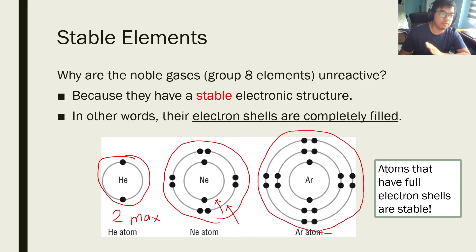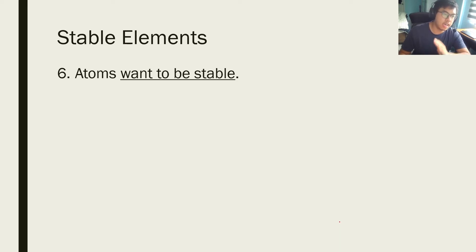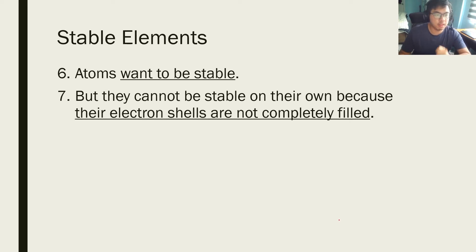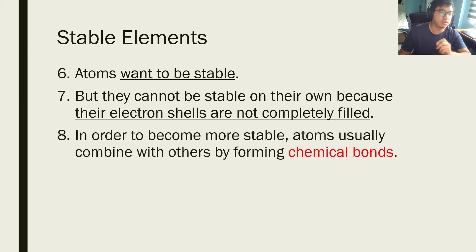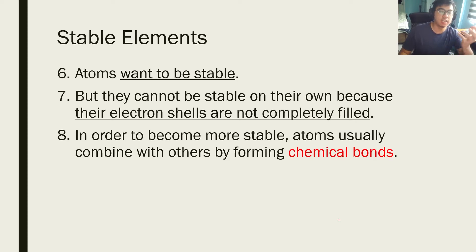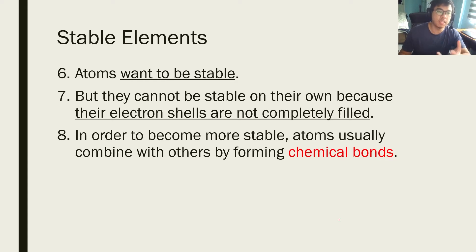Other atoms that do not have a full electron shell are unstable, and they want to be stable, but they cannot be stable on their own because their electron shells are not completely filled. So the atoms are not stable — they do not want to be alone. In order for them to be complete, they want their electron shells to be completely filled. So how do they do that? They do that by forming chemical bonds with other elements.